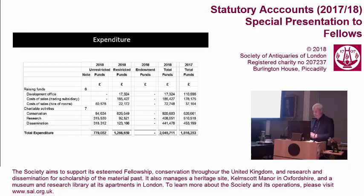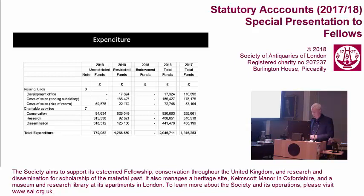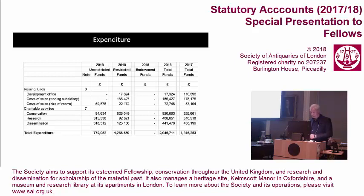Expenditure is split, as you can see, into three columns on the left between unrestricted funds, restricted funds and endowment funds. The performance of these funds is monitored very closely by the society and detailed in the narrative section. Focusing on the two columns on the right — the total funds for 2017 and 2018 — the costs of raising funds consist of the development office, the cost of sales of the trading company Lucerna, and room hire. The total cost of raising funds came to £275,000 in 2018 compared to £326,000 in 2017.